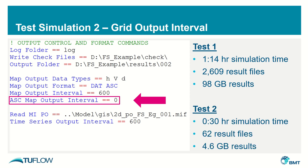How does that change the numbers when we add that single command? Instead of 2,600 result files, we have 62. Instead of around 100 gigabytes worth of results, we're down to 4.6 gigabytes. So it's a 95% reduction — pretty significant.